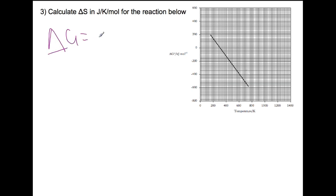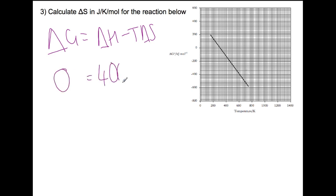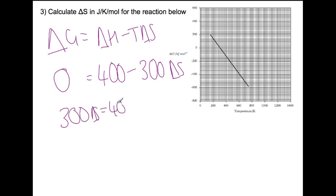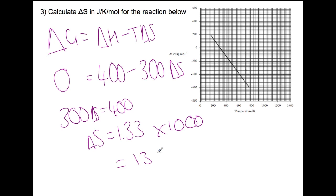To be able to calculate delta S, we need to use the answers to the two previous parts. We're going to set delta G to be zero. We know that delta H is 400, and we know that the temperature at which it becomes feasible — so when delta G is zero — is 300, and that leaves us with delta S. This comes out in kilojoules per mole, so we need to multiply by a thousand to get into joules per mole. So our answer is 1330 joules per mole per Kelvin.